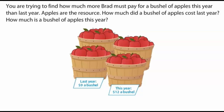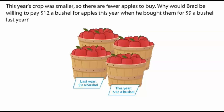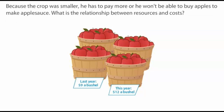Apples are the resource. Last year a bushel of apples was nine dollars. This year apples cost twelve dollars a bushel. Why do the apples cost more this year? This year's crop was smaller, so there are fewer apples to buy. Because the crop was smaller, Brad has to pay more or he won't be able to buy apples to make applesauce.